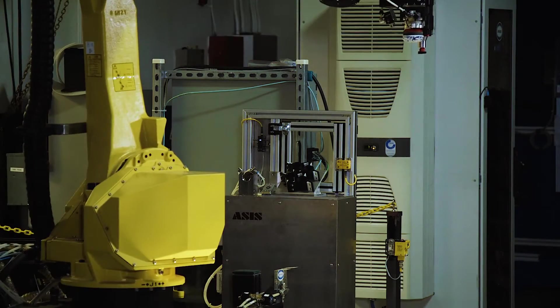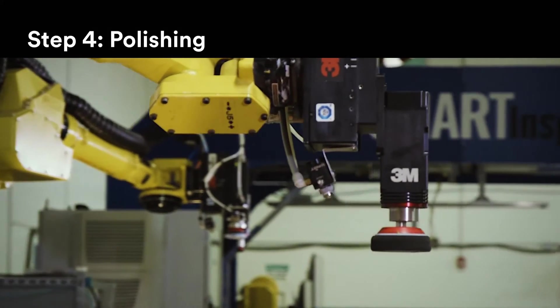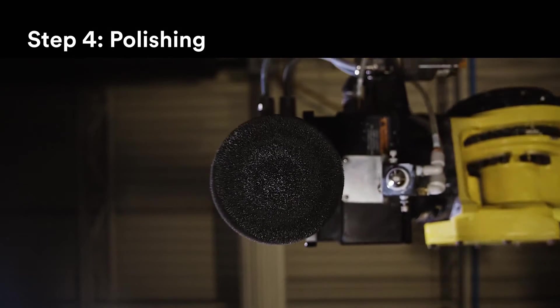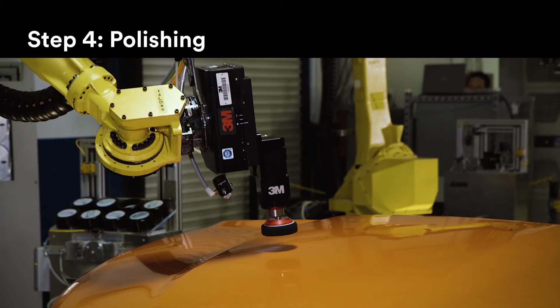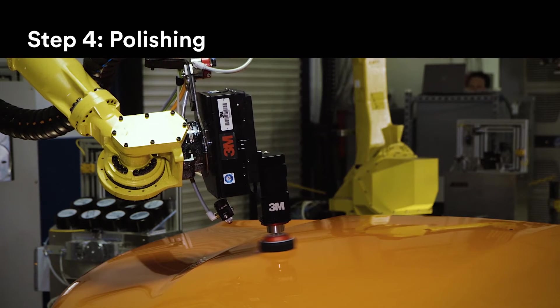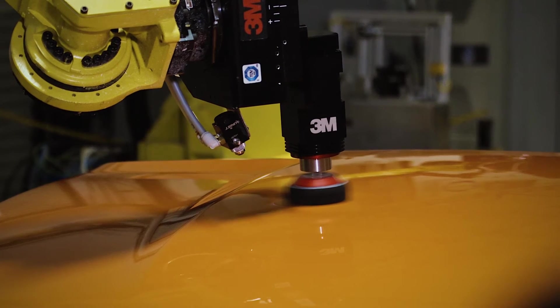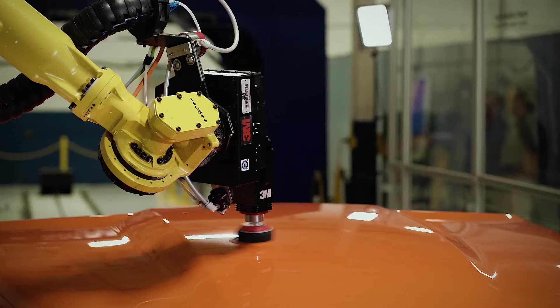The vehicle then moves to the buffing step, where 3M Finesse-it polish is automatically dispensed on the surface to start the polishing process. Thanks to 3M's process and automation expertise, the buffer follows prescribed trajectories and force patterns to polish the repaired area.